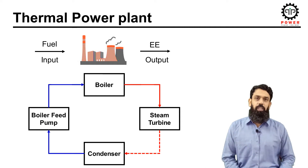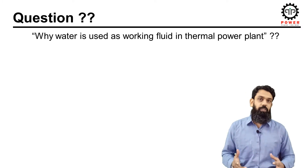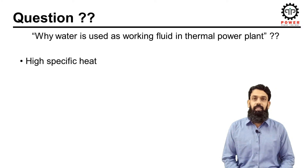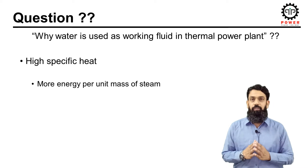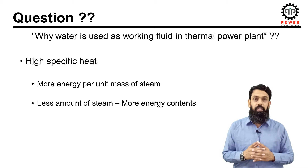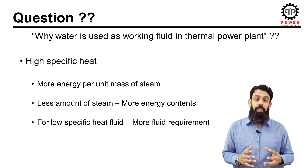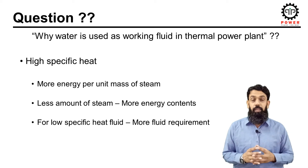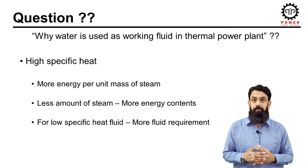Before going into the details of a thermal power plant, let's first understand why only water is used as a working fluid. The technical answer is that water has high specific heat. In a thermal power plant, steam is generated in the boiler and is used in the turbine to generate electrical energy. High specific heat means we can add more energy per unit mass of steam, so less steam is required to generate the required amount of power. If we use a fluid with low specific heat, we need to boil more fluid to achieve the required energy. There are other fluids with even higher heat capacities than water.